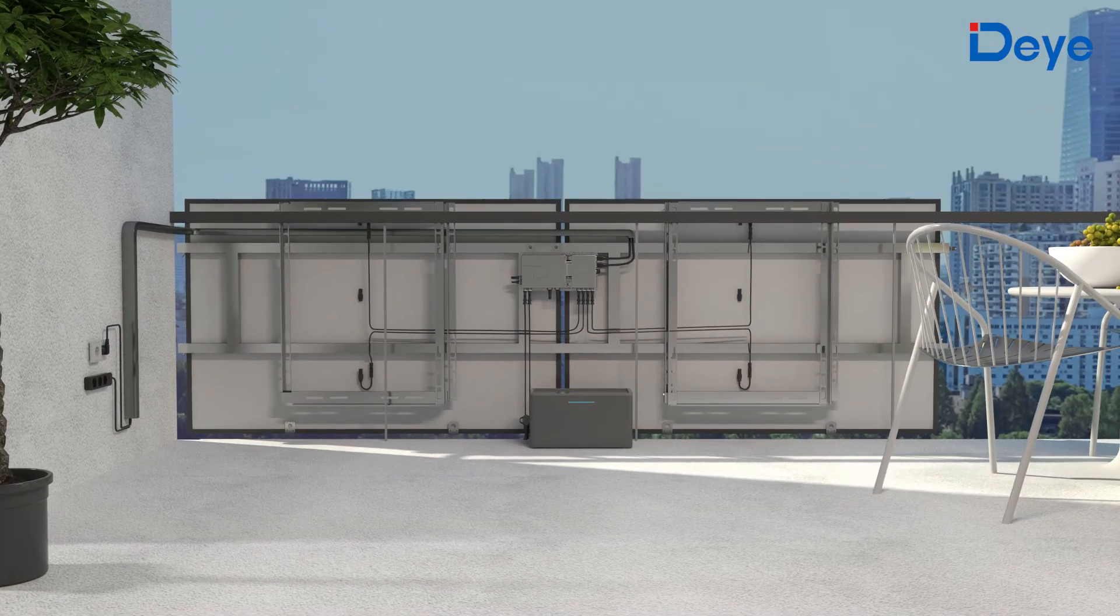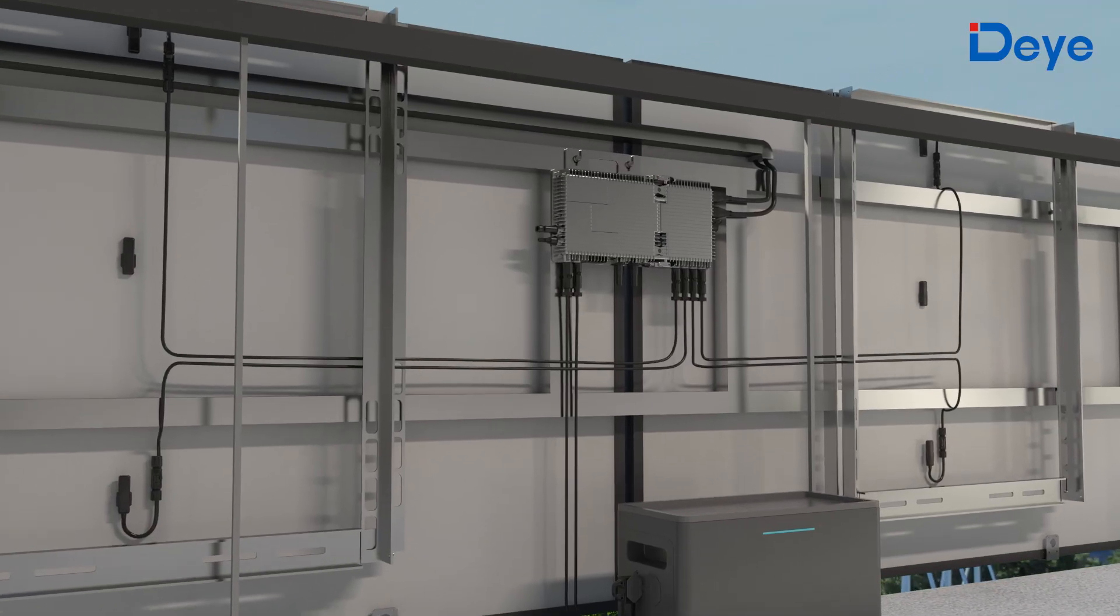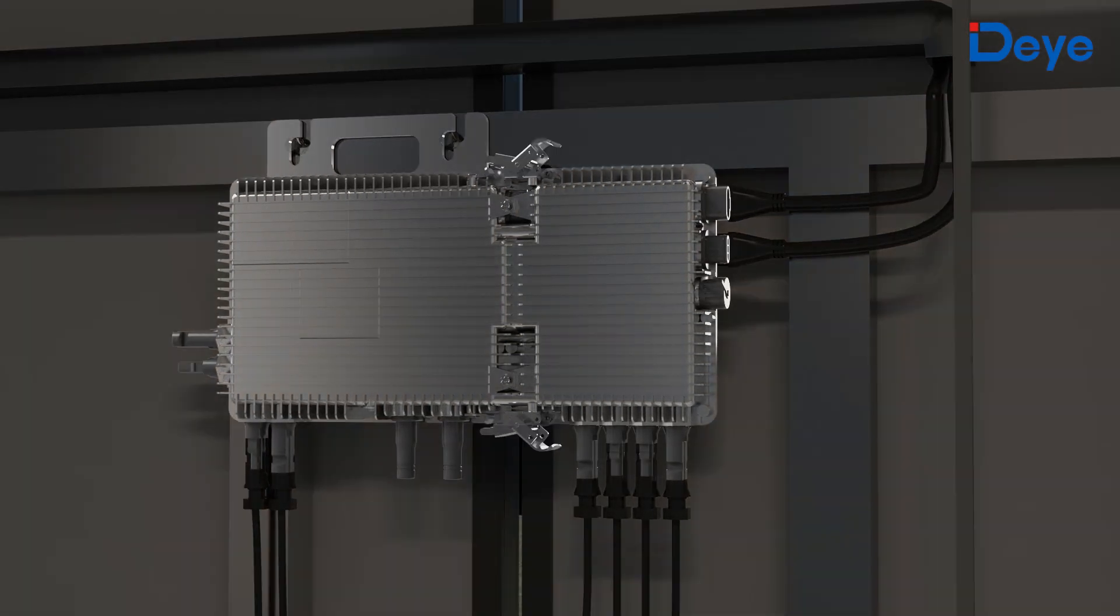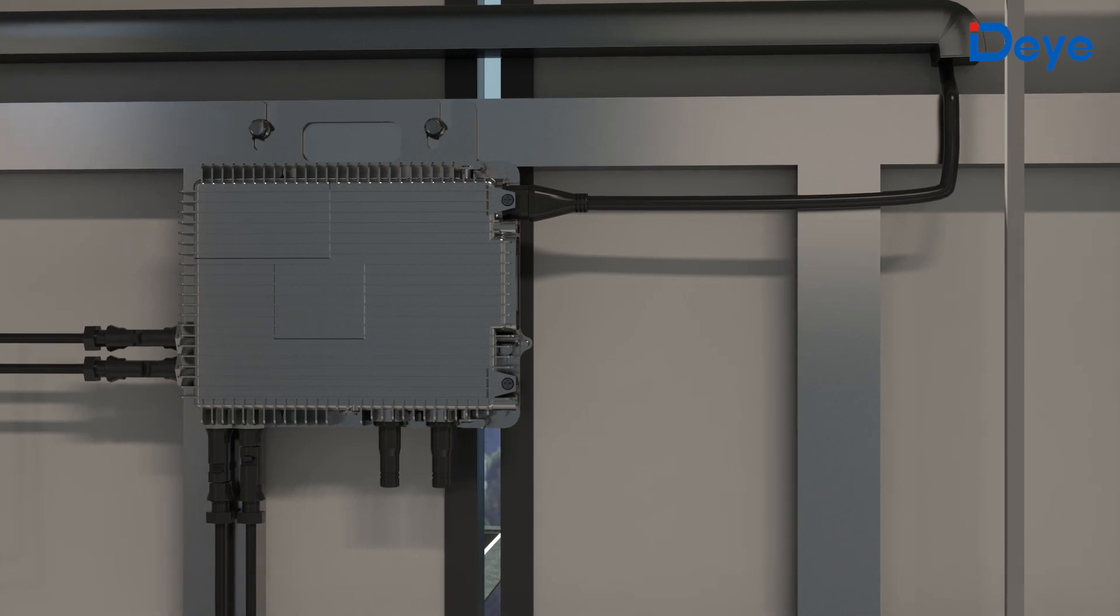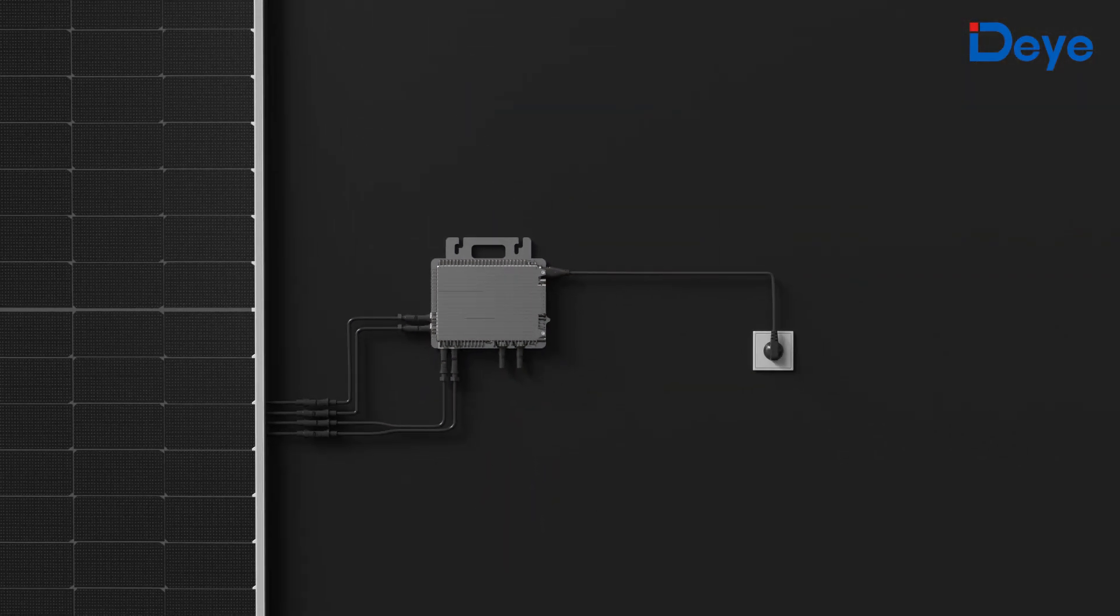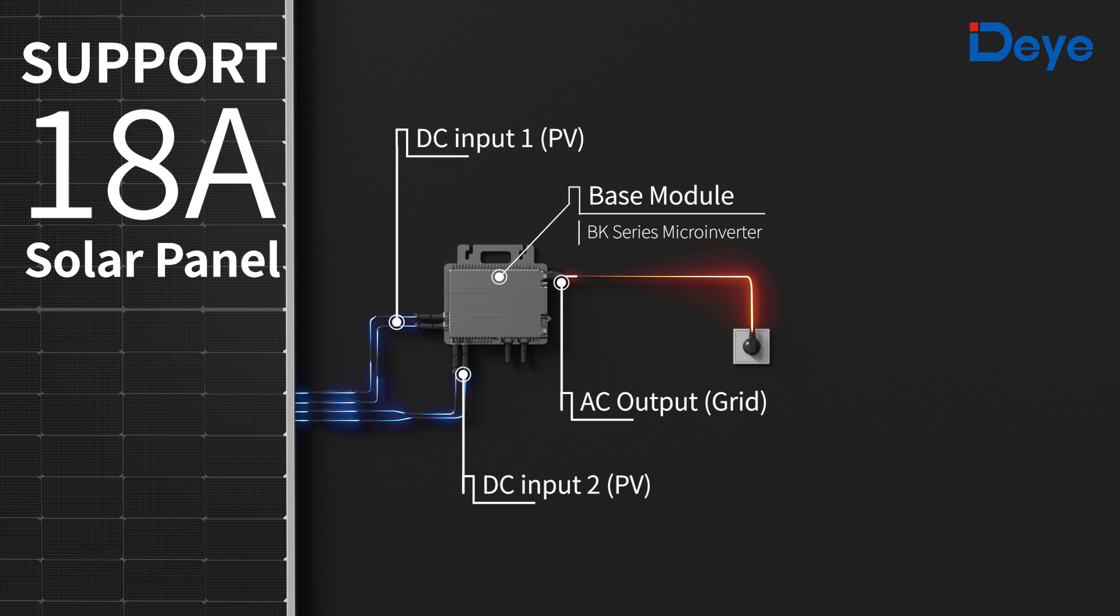The BK series multifunctional microinverters are designed for balcony scenarios, featuring an innovative split body design. The base module can be used independently as a standard microinverter. When connected to photovoltaic panels, it creates an on-grid balcony solar system.